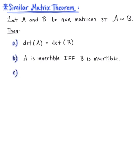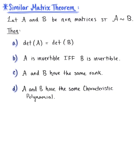Property C tells us that matrix A and matrix B have the same rank. Property D tells us that matrix A and matrix B have the same characteristic polynomial.